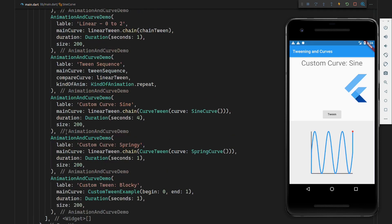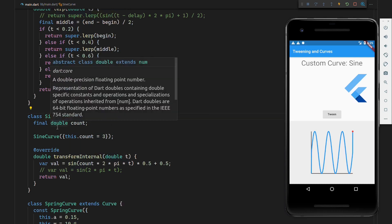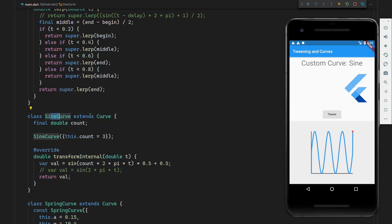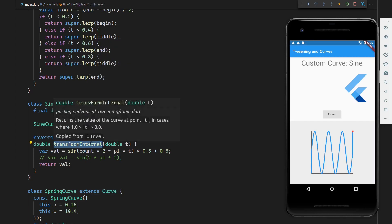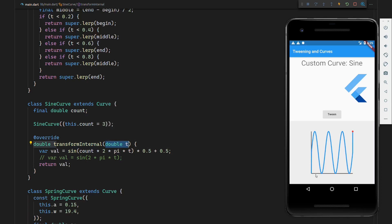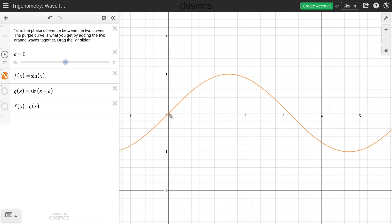So if we take a look at the code, you can see that here I'm creating the page and it's using a curve of sine curve. And this is a custom class that I made. So it's a sine curve that extends Curve, and all you need to do to implement your own curve in Flutter is extend the Curve class and then override the transform interval. And then you get access to the time value.